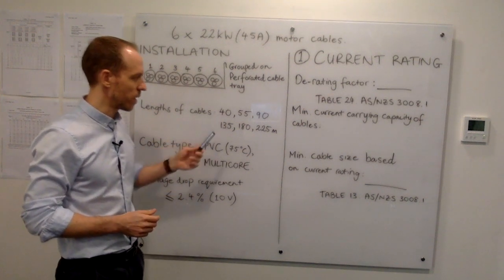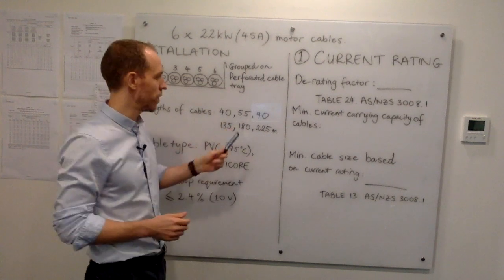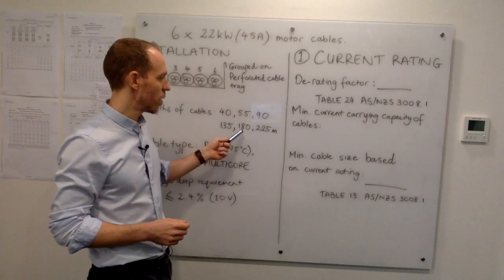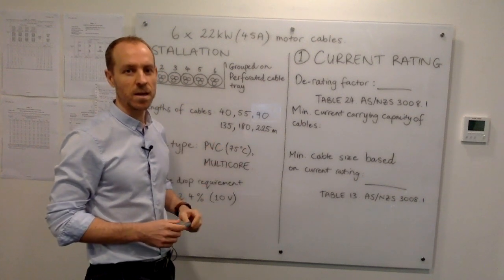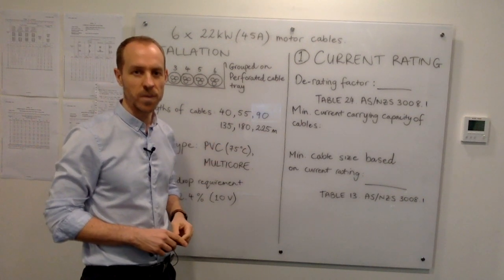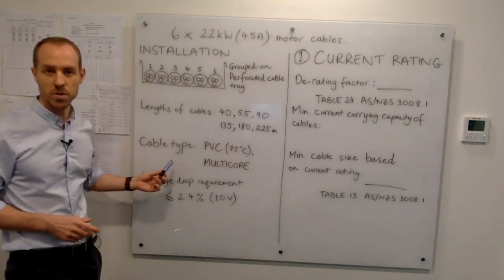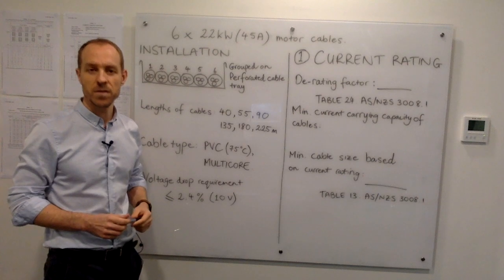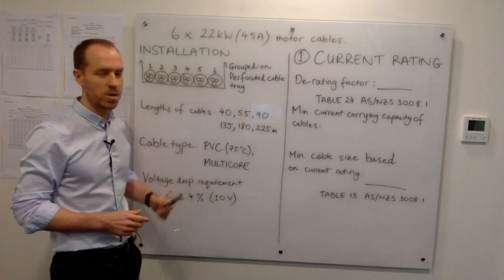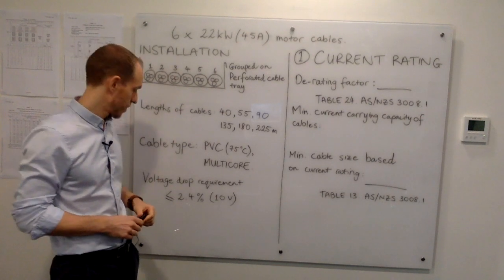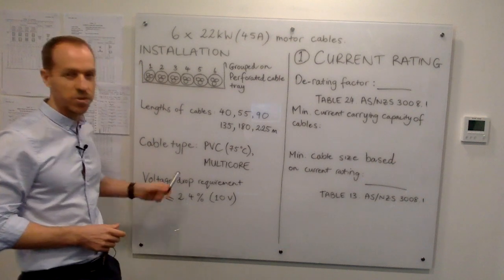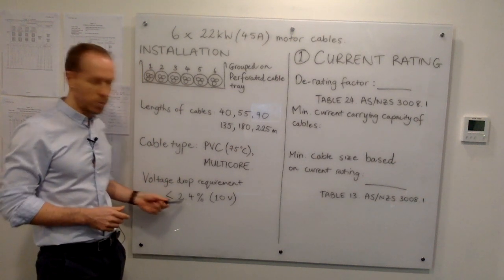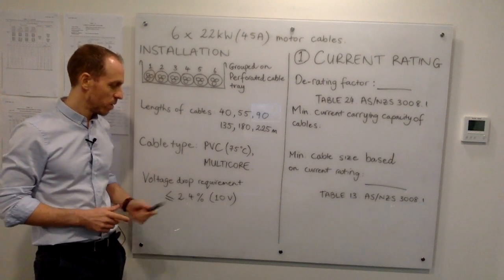These motors are located at different distances from the point of supply. We've got cable lengths of 40 metres, 55, 90, 135, 180, and 225 metres. The cables will be PVC type, 75 degrees, multicore. There's a voltage drop requirement of 2.4%, or 10 volts.